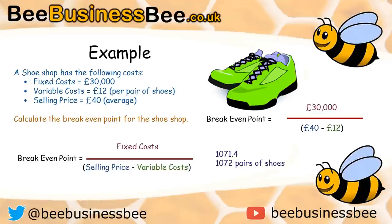Let's take a look at how this actually works. A shoe shop has got the following costs: fixed costs of £30,000, variable costs of £12 per pair of shoes, and a selling price of £40 per pair of shoes on average. To calculate the breakeven point, we write out the formula — fixed costs divided by the selling price minus the variable costs. Substituting in: £30,000 divided by (£40 minus £12), which gives us £30,000 divided by 28.